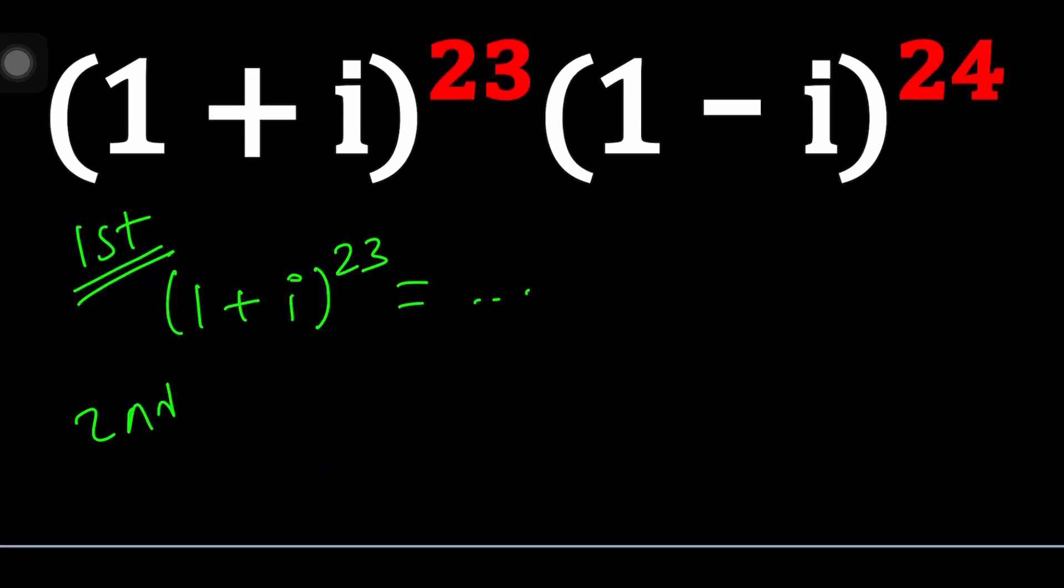Now let's take a look at the second method. I want to square (1 + i), because it's a special number. When you square it, you're going to get 1 plus i² plus 2i. And i² equals negative 1, so they cancel out, leaving us with 2i.